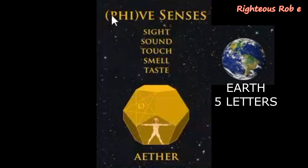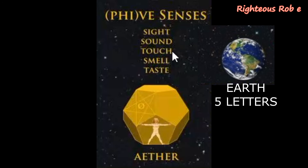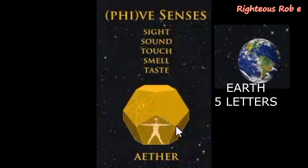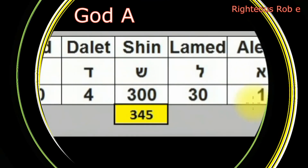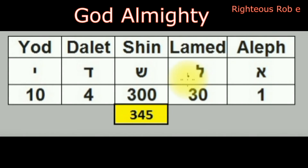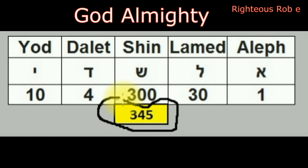Five represents the five senses: sight, sound, touch, smell, and taste — the golden ratio, the golden mean. The pentagon of the ether represents the five letters of Earth in the three-four-five triangle. The hypotenuse of the three-four-five triangle: El Shaddai in Hebrew has a Hebrew gematria sum total letter value of three hundred and forty-five.